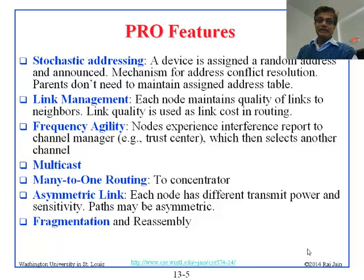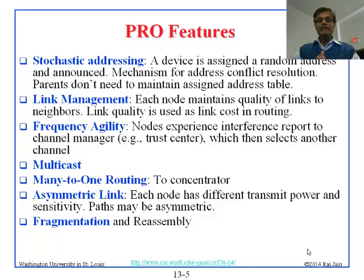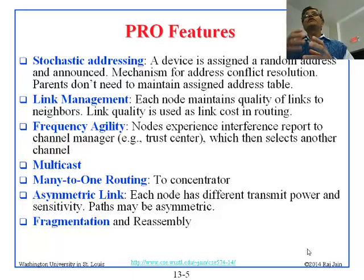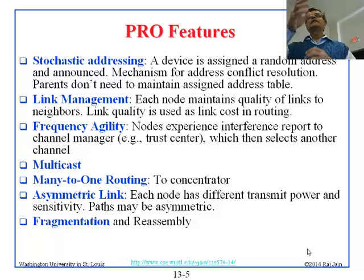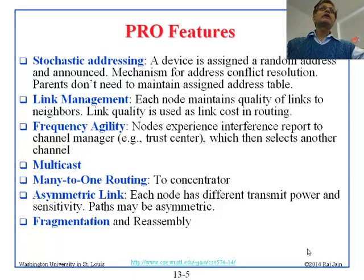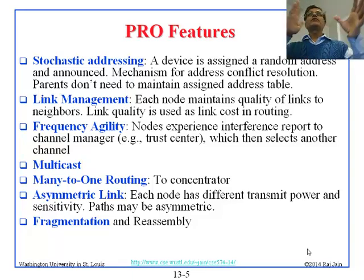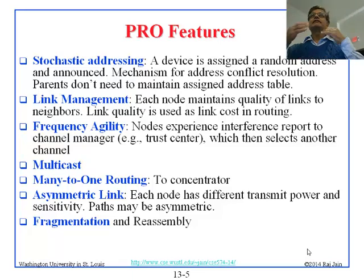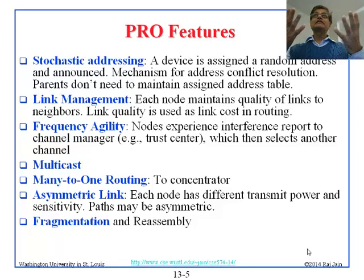Link management: everybody keeps track of the quality of links. We know that when I send a packet to one node the signal level might be minus 53, but to another it is minus 35. So we know which link has a better signal, and links have different costs depending on signal level.